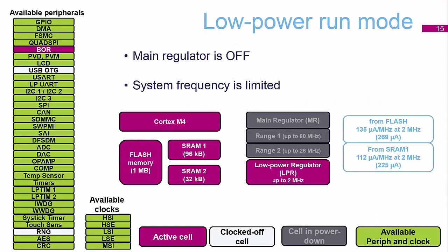The next mode we have is Low Power Run mode. This is where the main regulator is switched off, which means we are limiting our maximum speed to 2 megahertz — all we can get out of the low power regulator. USB is the only peripheral that is not clocked; we haven't got 48 megahertz, but all other peripherals are available in Low Power Run mode.